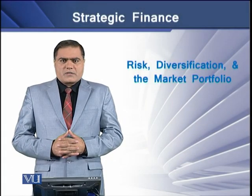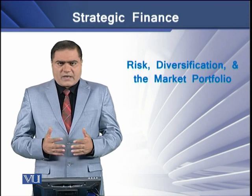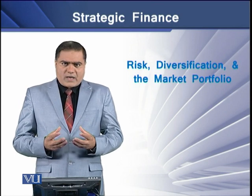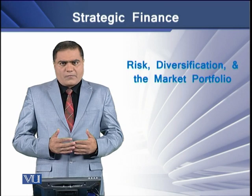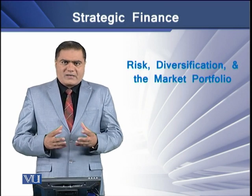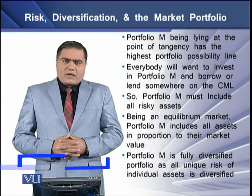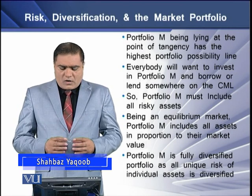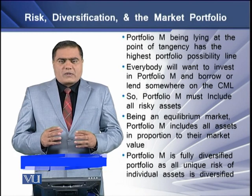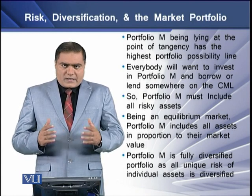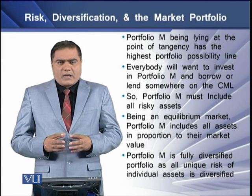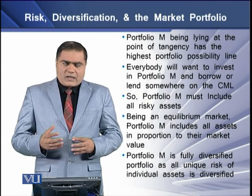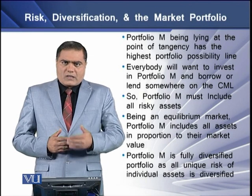Capital market theory urges investors to invest in a risk-free asset and a portfolio of risky assets. The investment combination of these two types of assets gives the concept of diversification and the corresponding riskiness. Portfolio M lies on a point of tangency, which includes all possibility portfolios with the highest level, and this is why everybody wants to invest in portfolio M. Investors also want to lend or borrow at the risk-free rate just to remain on the capital market line.